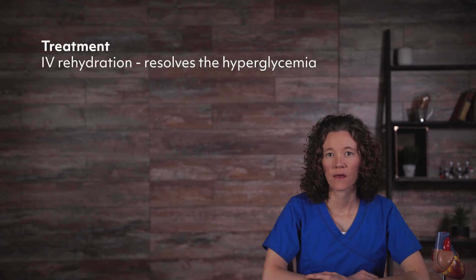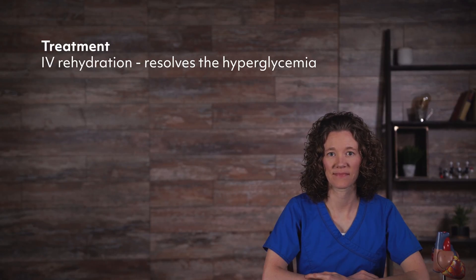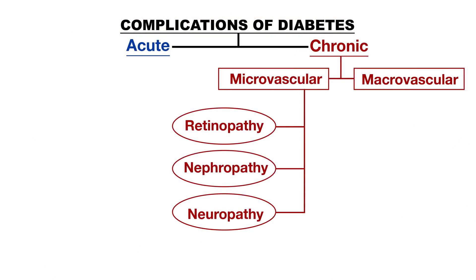Without rapid treatment, HHNS can cause death. Primary treatment involves IV rehydration, which resolves the hyperglycemia, so IV insulin is usually not needed. Now let's take a look at the chronic complications of diabetes that develop from ongoing hyperglycemia. They are classified as microvascular or macrovascular, and are a result of the length and degree of hyperglycemia.